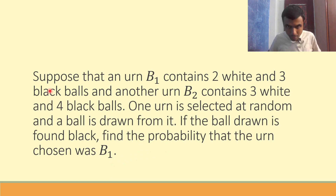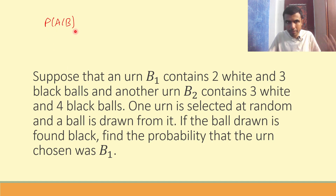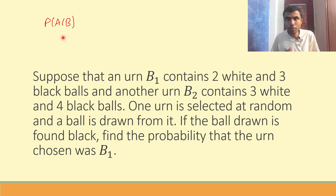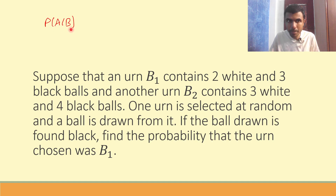Now here you have to understand a concept — conditional probability. P of A given B, written as P(A|B). I'm sure you must have seen it, but many of you may not know exactly what it means. P(A|B) — I'm calling it A given B — it means the happening of A after the happening of B.